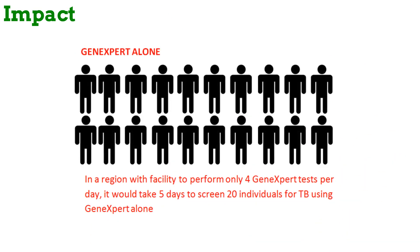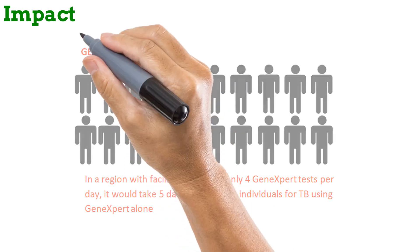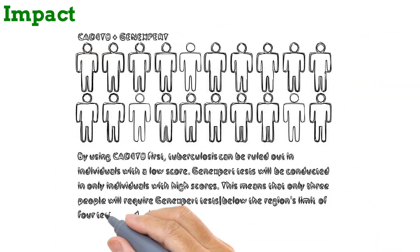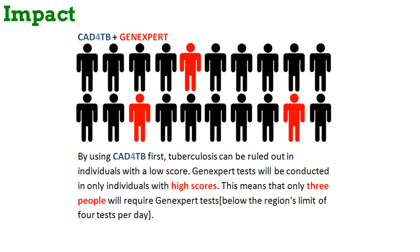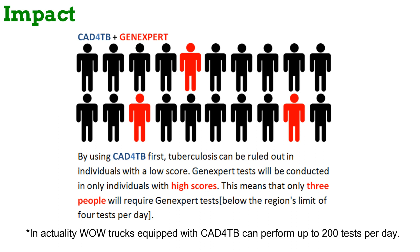For example, in a region with GeneXpert facility that can perform only 4 tests per day, screening 20 people for active tuberculosis would take 5 days. But if chest X-rays using computer-aided detection for tuberculosis are performed first, tuberculosis can be ruled out in persons with low scores. In this example, only 3 people have scores high enough to suspect tuberculosis, so only these 3 would require GeneXpert. Even though this region can perform only 4 GeneXpert tests each day, through this method we are able to test all 20 people for tuberculosis in 1 day. By making diagnosis quicker and less expensive, treatment is made more effective.